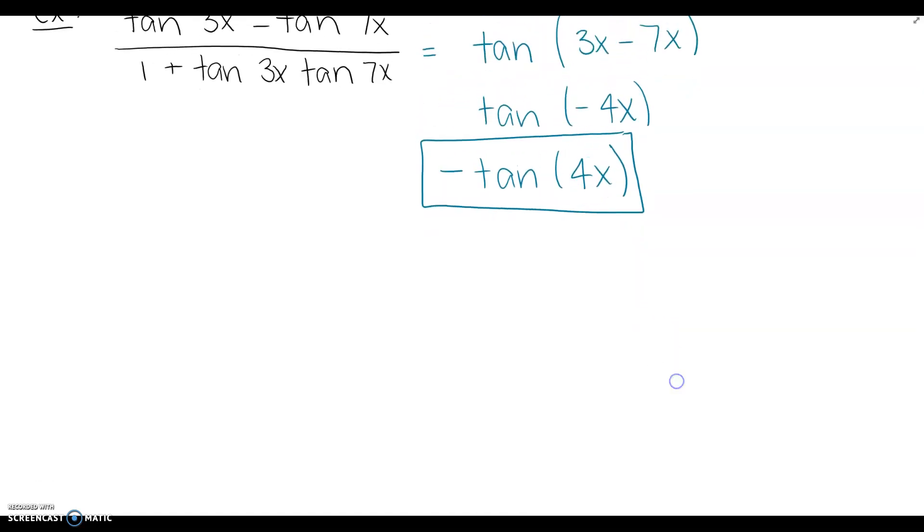I would like for us to now do a you-try. For the first you-try, we're going to do tangent of 78 degrees minus tangent of 18 degrees over 1 plus tangent of 78 times tangent of 18. Now this is really similar to the last problem, but it's also a little different because we're using degrees. So you're actually going to be able to do some combining in a little bit. I would like you at this point to pause the video and try to complete this problem on your own. And once you finish, hit play.